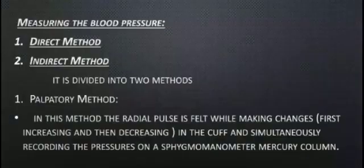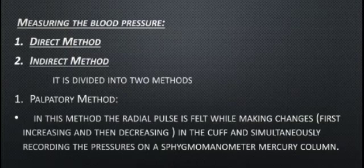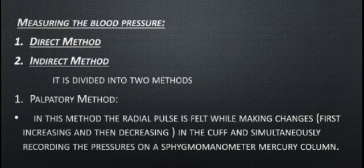For measuring blood pressure, there is the direct method and the indirect method. The indirect method is divided into the palpatory method and the auscultatory method. In the palpatory method, the radial pulse is felt; a cuff is applied but no stethoscope is used. The cuff is filled with air, then released, and pressure is read on the sphygmomanometer mercury column. This method only measures systolic pressure.